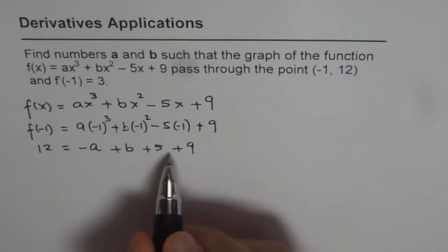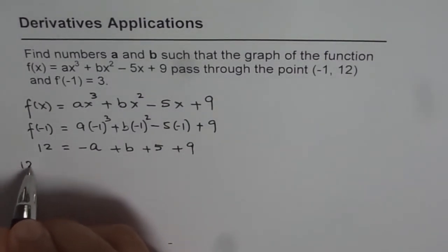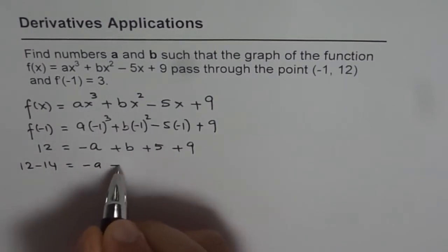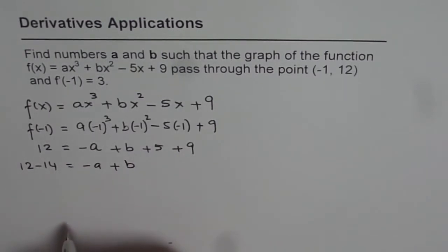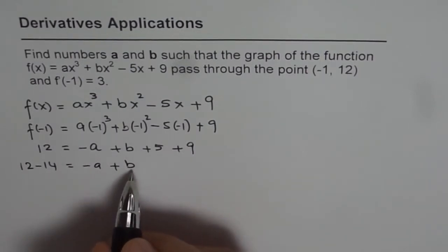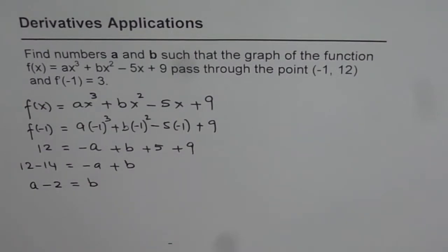So when I bring 14 to the left side I get 12 minus 14 equals -a + b. So from here we can say, what is b equals to? Let's take a also on this side, so we get a, 12 minus 14 is -2 equals b. So we get a relation between a and b.